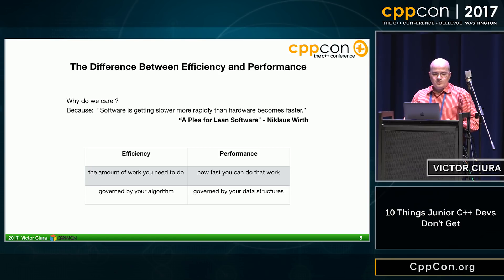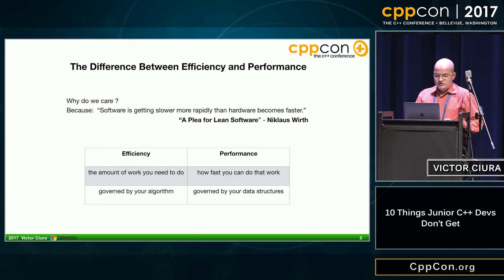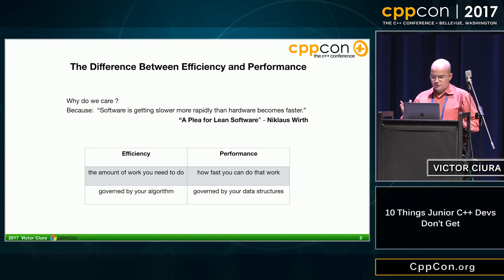Junior developers don't get the difference between efficiency and performance, and why do we care about this? Because software is getting slower much more rapidly than hardware becomes faster — another quote by Niklaus Wirth from that book. Efficiency is about the amount of work you need to do and is governed by your algorithms. Performance is how fast you can do that work and is governed by your chosen data structures.